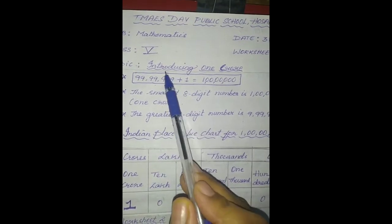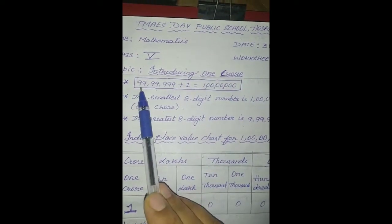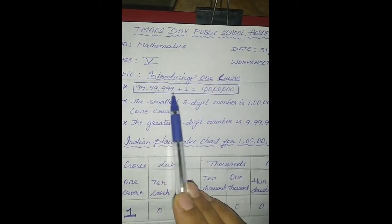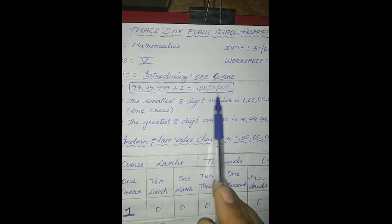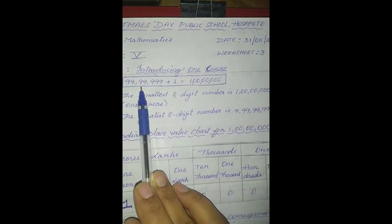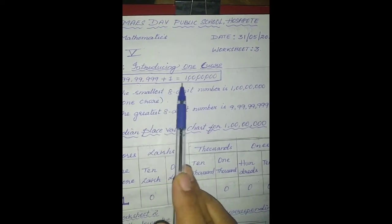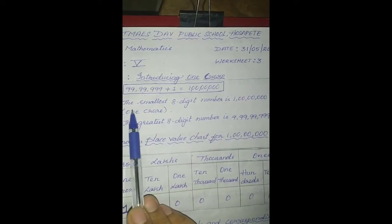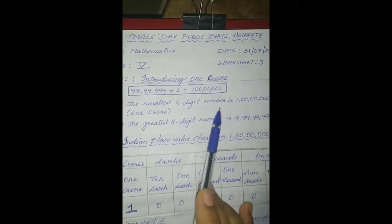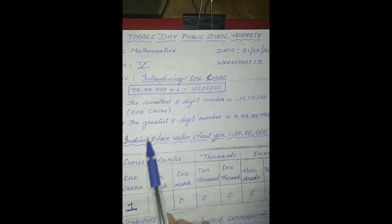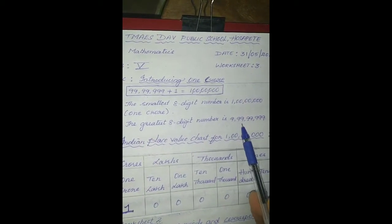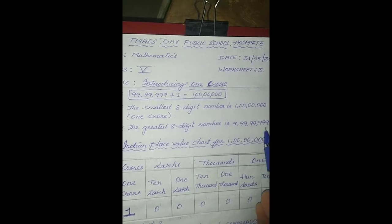Let us start today's session by introducing 1 crore. The successor of 99,99,999 plus 1 is 1 crore. By adding 1 to 99,99,999 we get 1 crore. The smallest 8-digit number is 1 crore and the greatest 8-digit number is 9,99,99,999.